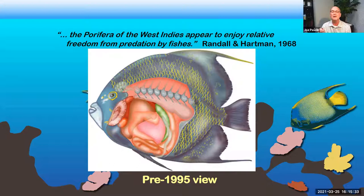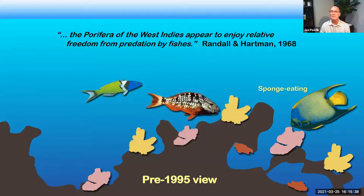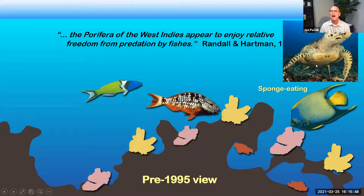I'm going to put something in your head because I'll get back to this. In addition to determining that angelfish were sponge eaters but their effects are relatively minor, Annie Malin came along shortly thereafter and demonstrated that hawksbill turtles also nearly exclusively fed on sponges in the Caribbean. But everyone ignored hawksbill turtles because there were simply too few of them for anyone to take any notice at that particular time. I'll get back to that.